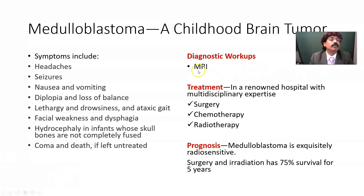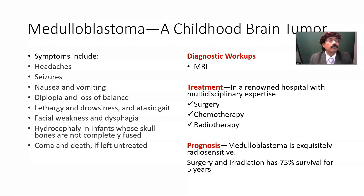Diagnostic workup: the best is MRI. Treatment should be done in a renowned hospital with multidisciplinary expertise — neurosurgeon, oncologist, and neuroradiologist — everyone should contribute. You need a big, renowned children's hospital. Surgery may be done endoscopically — opening in the skull, removing the tissue, and sending it for histopathology. As much cancer tissue as possible should be removed. Chemotherapy and radiotherapy are also used.